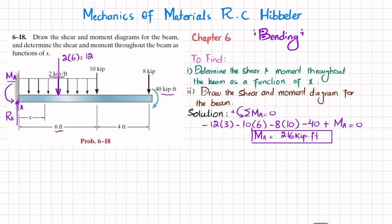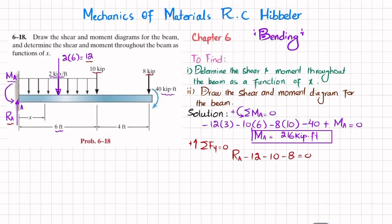Now finding Ra using the sum of all forces in the y-direction equal to zero, with upward forces taken as positive. Ra minus the distributed load resultant of 12 kips minus the point load of 10 kips minus 8 kips equals zero. Solving, Ra equals 30 kips.